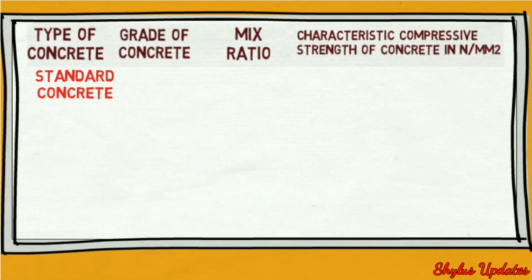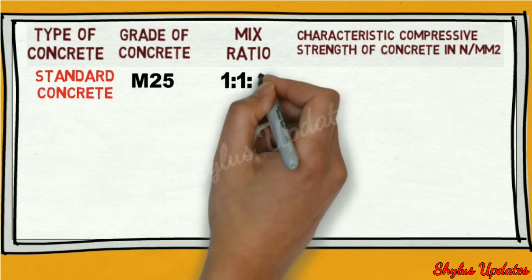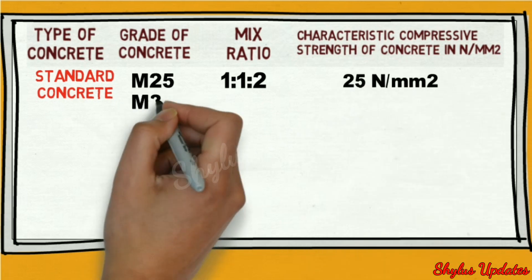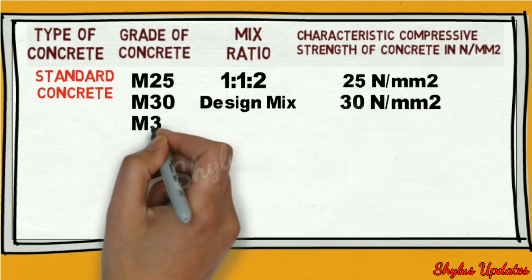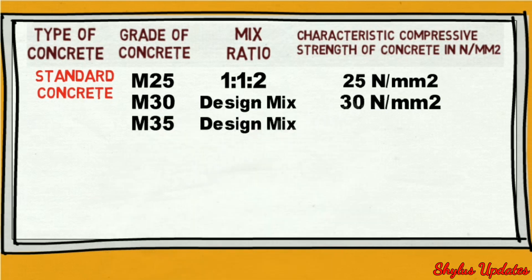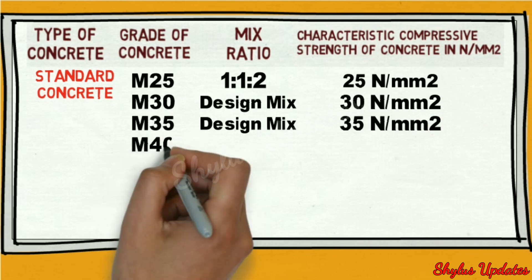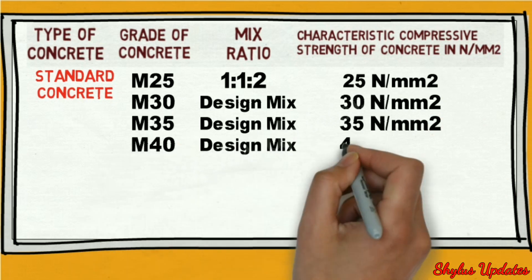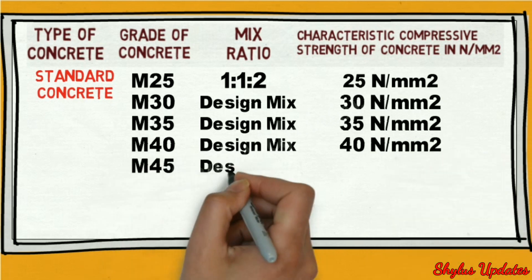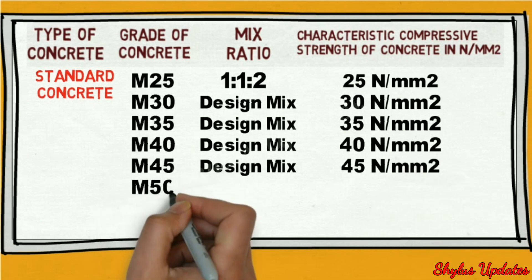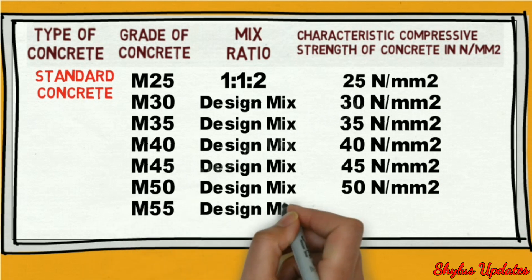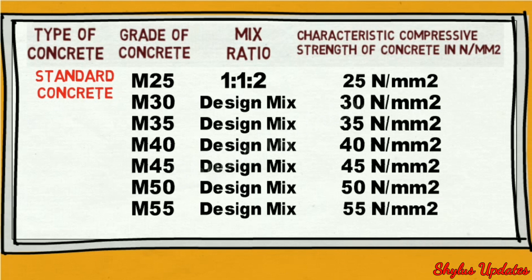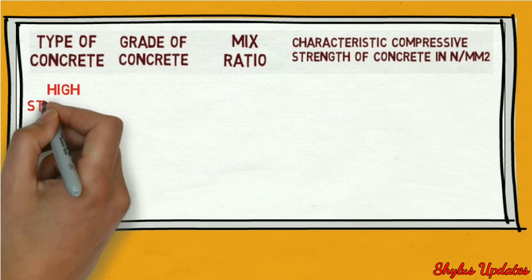Standard Concrete and High Strength Concrete are two of the main categories of concrete grades classified under IS 456:2000.